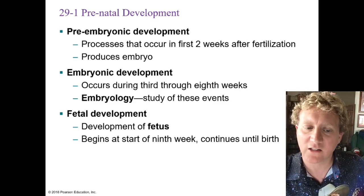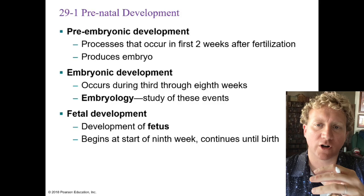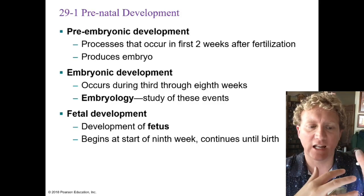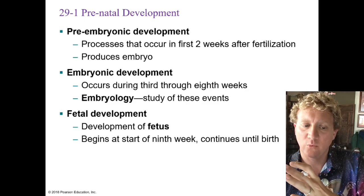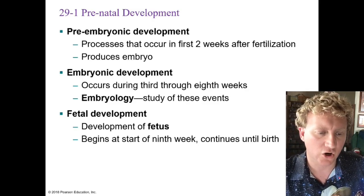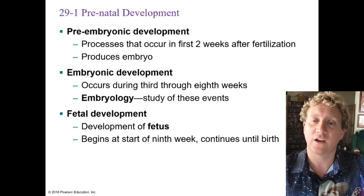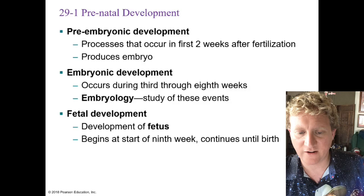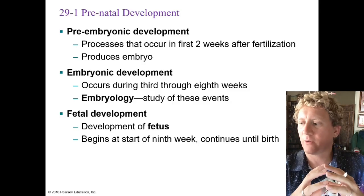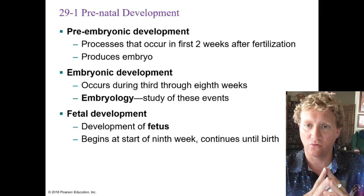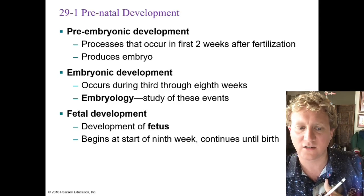Within prenatal development we have preembryonic development — the first two weeks after fertilization, just a mass of cells. From there, embryonic development occurs during weeks three through eight; studying these events is called embryology. After about week nine, we have fetal development — the baby is no longer an embryo but a fetus — and this continues through the rest of the pregnancy.